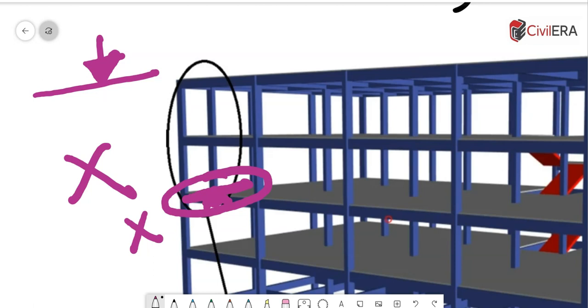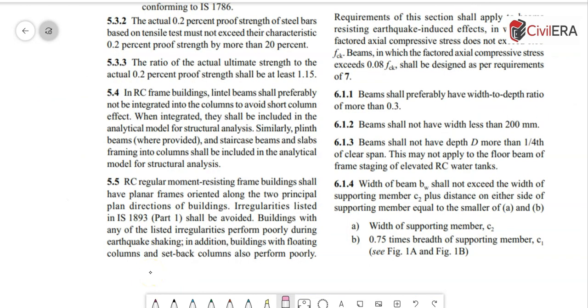Lastly, I want to bring your attention to IS 13920, which is the ductile detailing code, clause 5.5, which says that RC regular moment resisting frame buildings shall have planar frames oriented along the two principal plan directions of buildings.